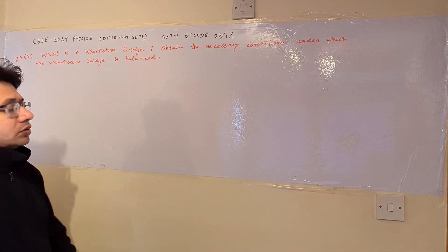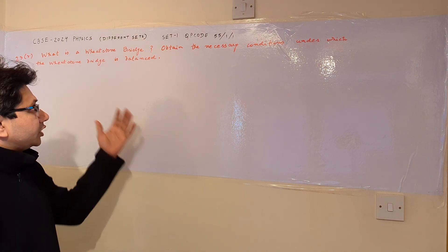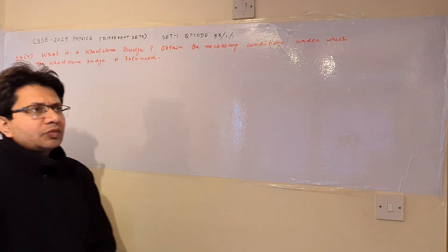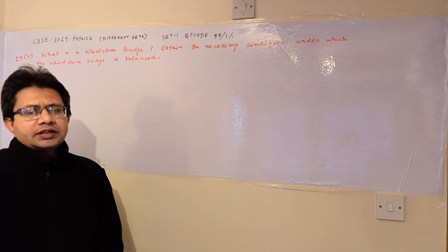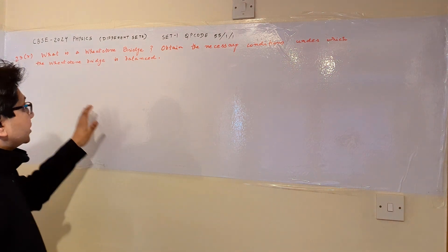So the problem is based on a particular measuring instrument, the Wheatstone bridge. This instrument is used to measure unknown resistance in terms of some known resistances. So we can define the Wheatstone bridge as,